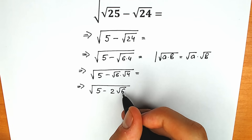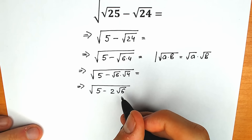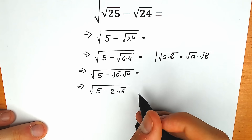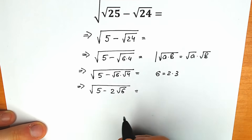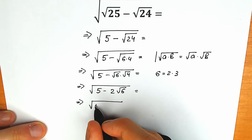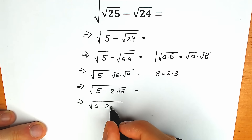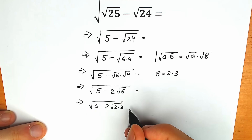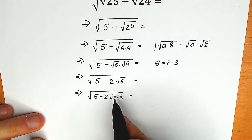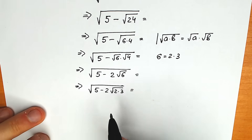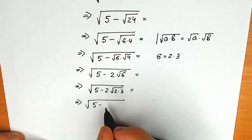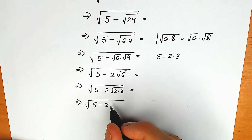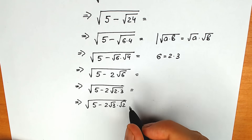We can simplify further by expressing 6 as 2 times 3. So we have square root of 5 minus 2 times square root of 2 times 3. Applying the same product property, we can split square root of 2 times 3 as square root of 2 times square root of 3. So we get square root of 5 minus 2 times square root of 3 times square root of 2.